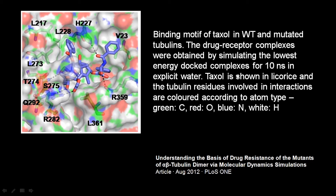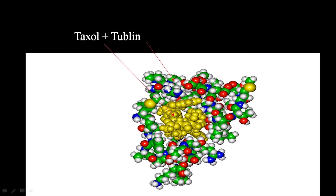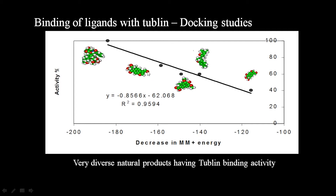Taxol binding to mutated tubulin is shown here with the active site. Red atoms are oxygens, blue are nitrogens, green are carbons, and white are hydrogens. With several molecules binding to this protein, we again see a decrease in energy correlating with increased binding and activity — as binding becomes stronger, the activity value also keeps increasing.